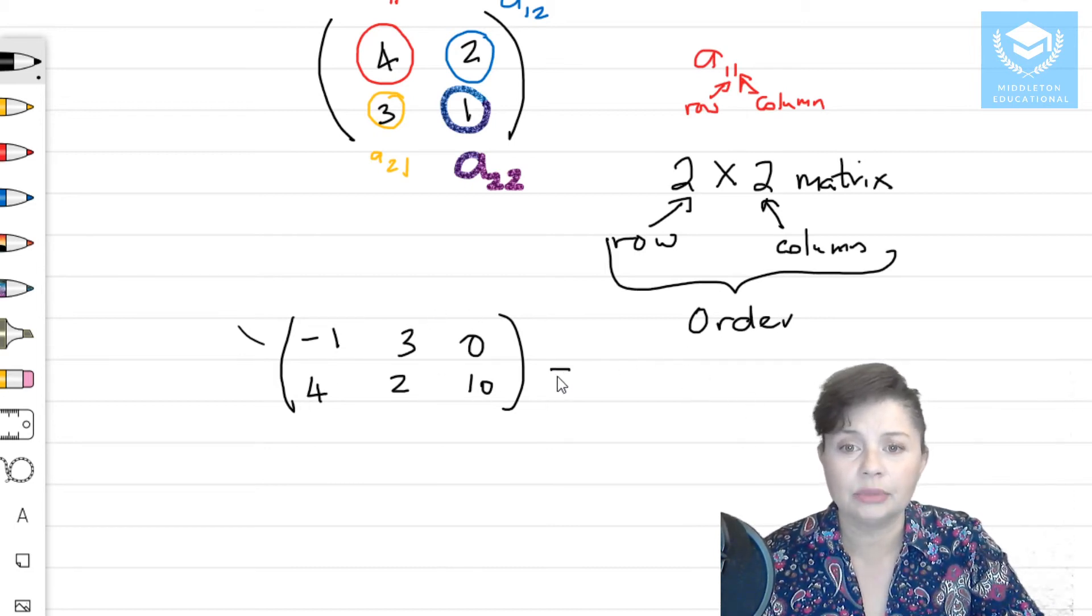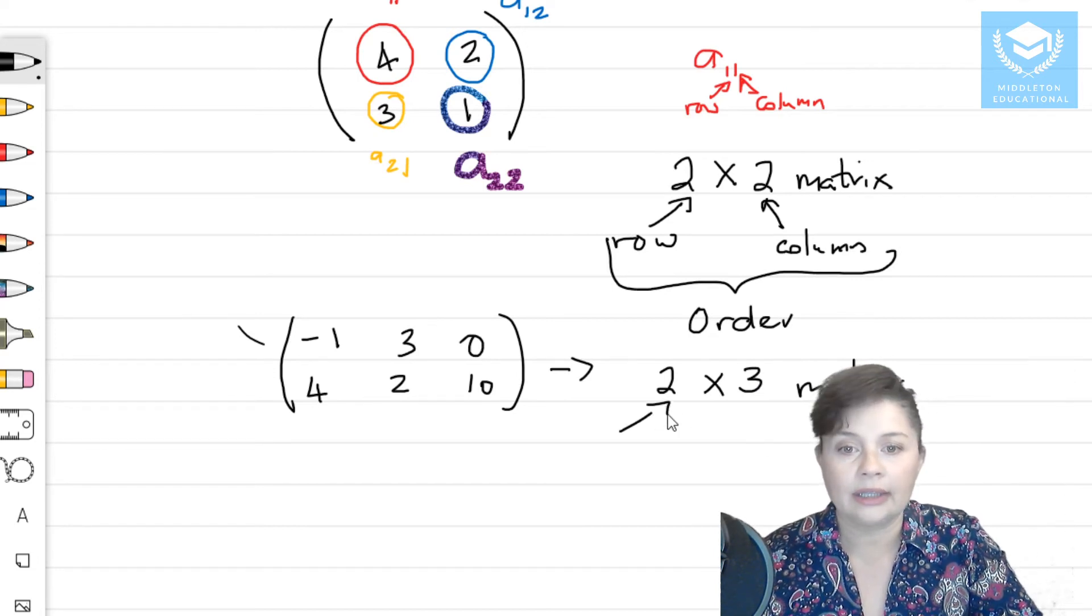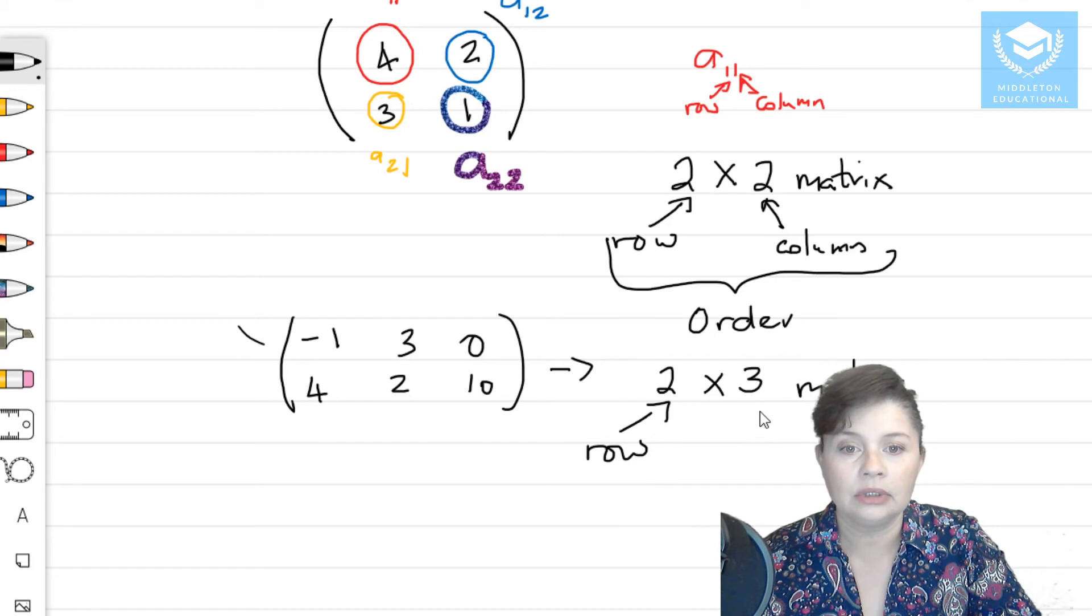And this is going to be a 2 by 3 matrix. So that is the row, and that is the column.